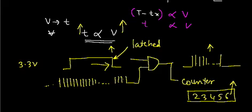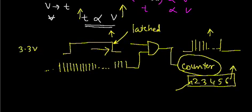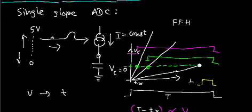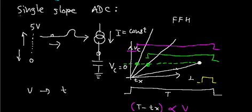We want voltage to be converted to some number, and the output of the counter will be digital because the counter is a digital device. So with this theme, it is possible to convert the analog signal into digital. This is the basic theme of a single slope ADC.